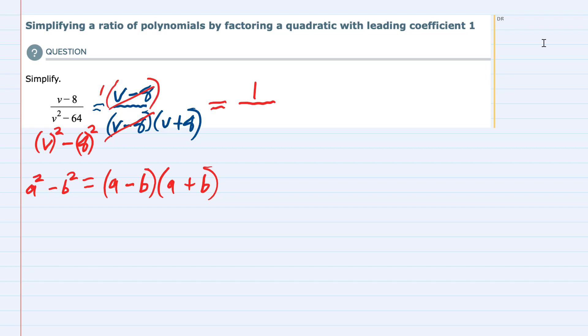It's a placeholder. In the denominator, v plus 8 is the only remaining expression, so we have simplified this to 1 over v plus 8.